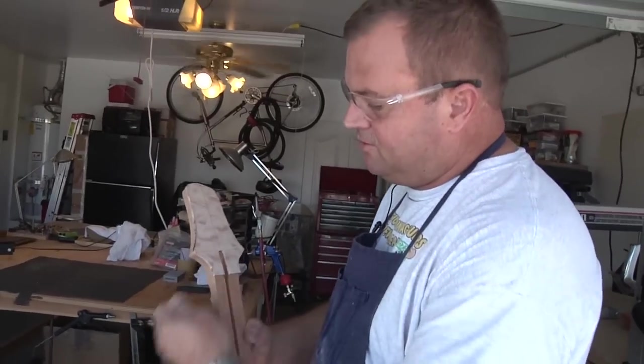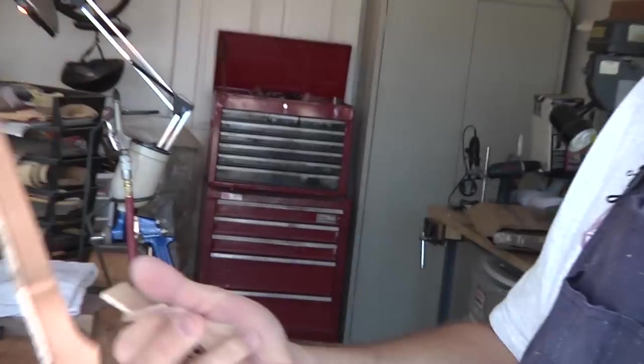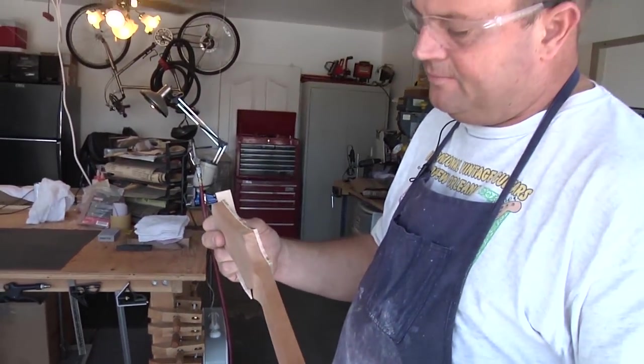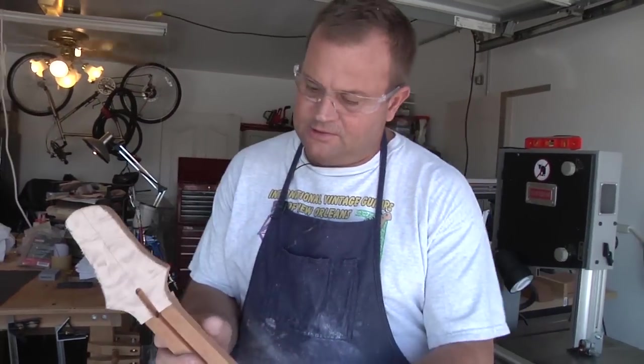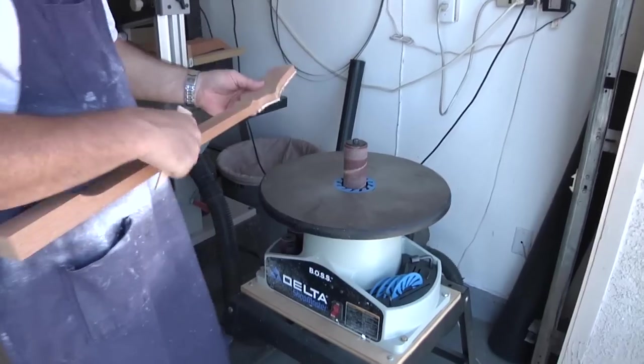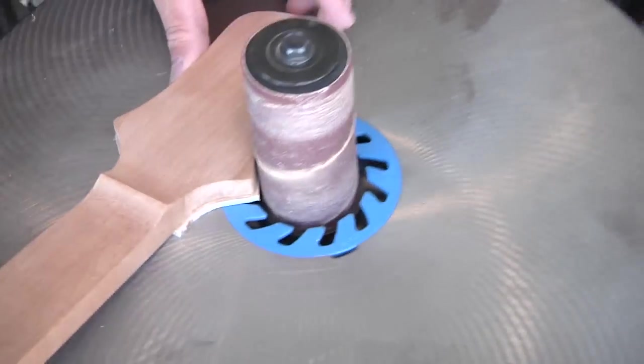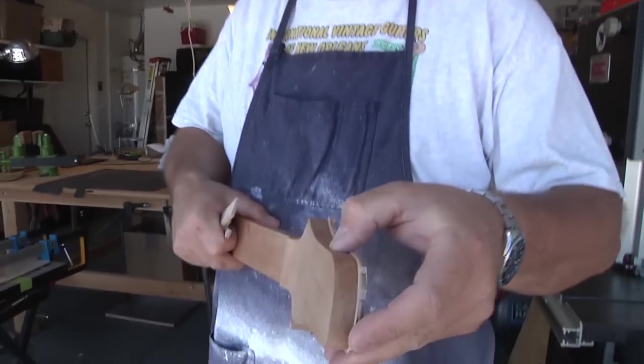Basically just trimmed all the excess off there. What I'll do is run this, we can do a little profile here around here real careful and just run it around there and chase it. Then I'll finish it up in the vise, just block sand it flush to the headstock.